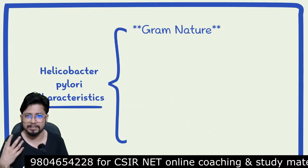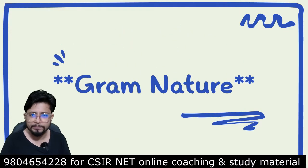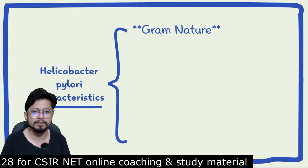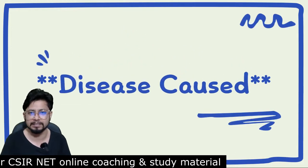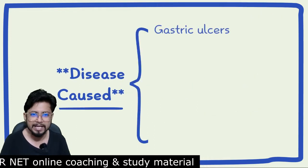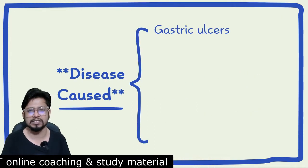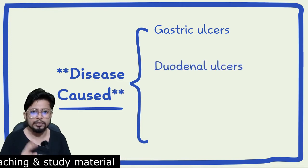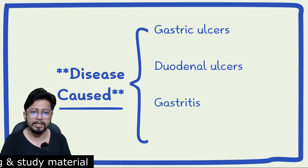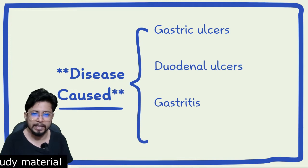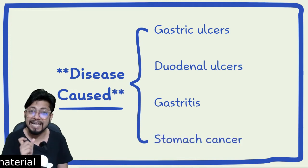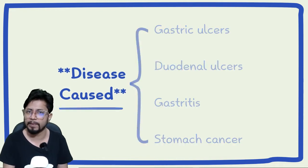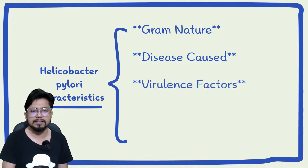The first thing we want to talk about is the gram nature of Helicobacter pylori. It is gram-negative in nature. The major diseases caused by Helicobacter pylori include gastric ulcers, duodenal ulcers, gastritis, and even stomach cancer can be triggered due to infection related to Helicobacter pylori.